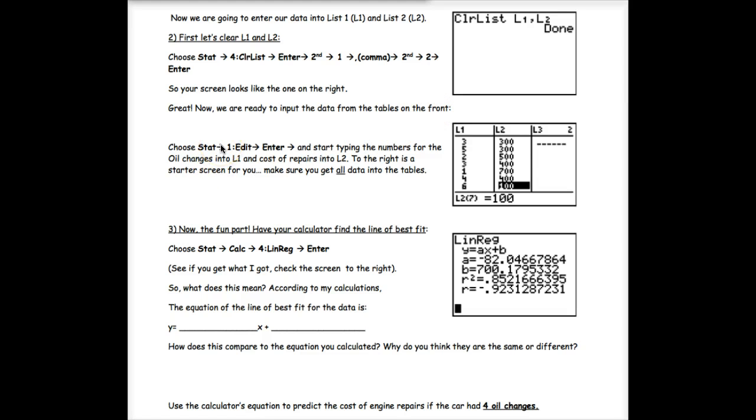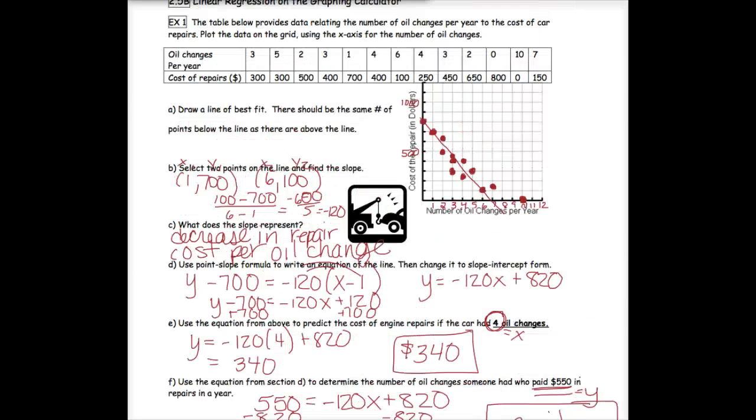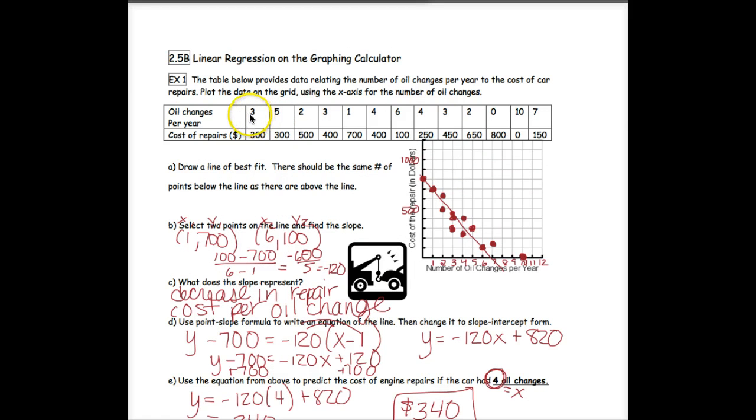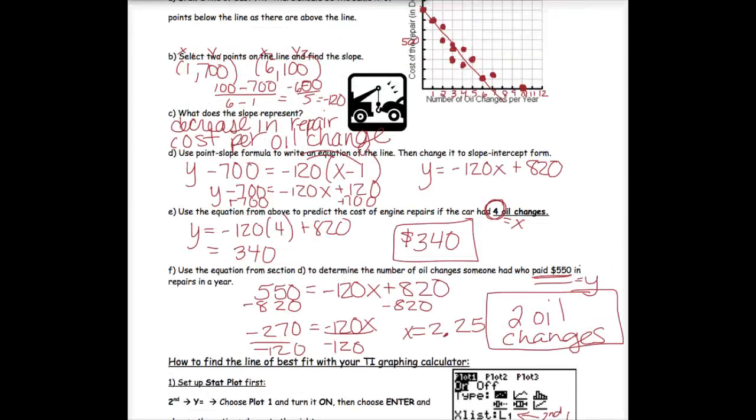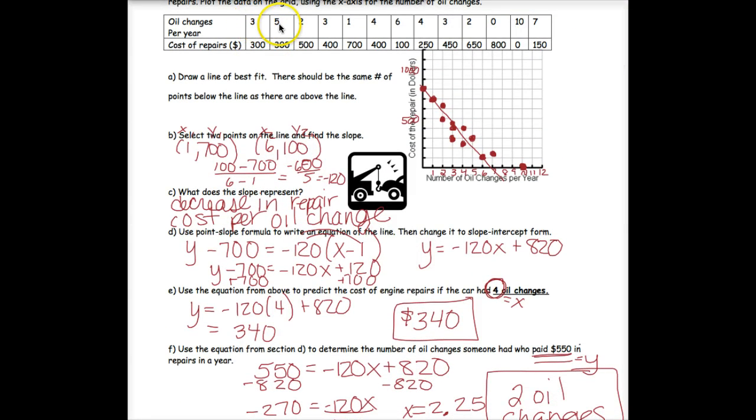Now we're ready to input the data from the tables on the front. Press stat, and then choose edit because we're editing our lists. You should see blank lists when you open it. You're just going to type in all the data that you see. Notice you can't see all of the data in one screen. On my X's, I'm going to enter 3, 5, 2, 3, 1, 4, so on and so forth. If you press the first piece of data for the X, which is 3, and press enter, it'll automatically start moving down. So you don't have to scroll. You can just press enter after each of your numbers.